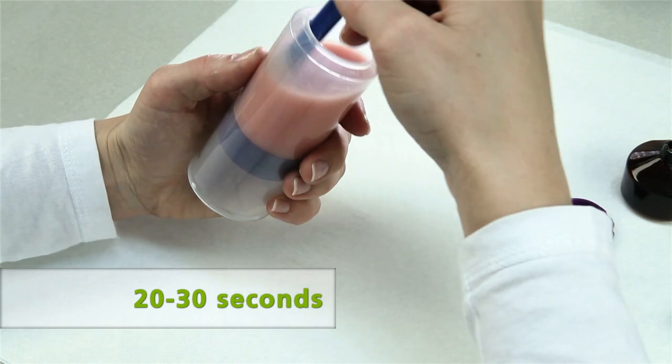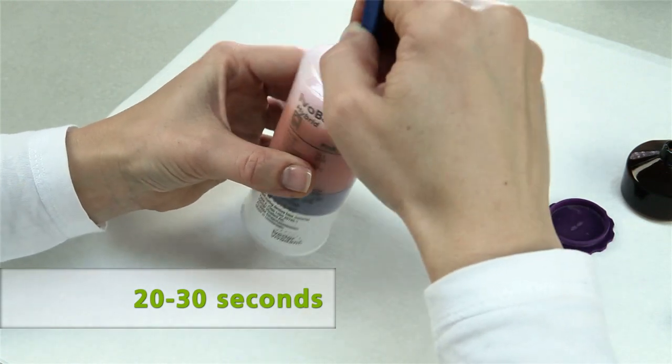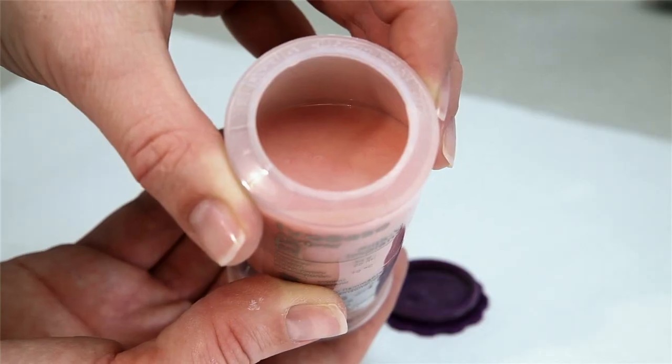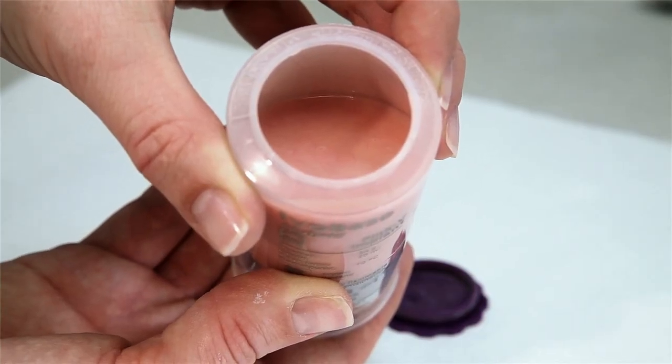Use the spatula to mix the monomer and polymer to a homogeneous mixture for approximately 20 to 30 seconds. Make sure that the material is thoroughly mixed.